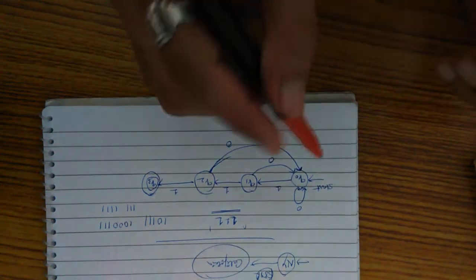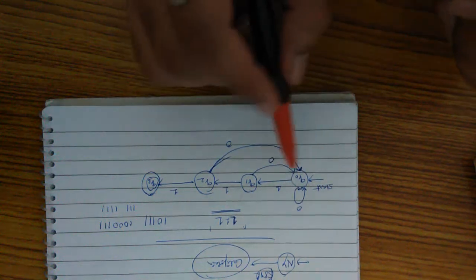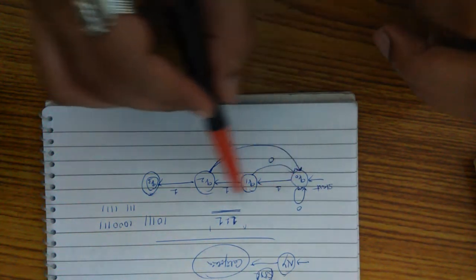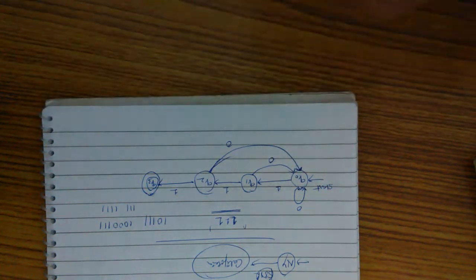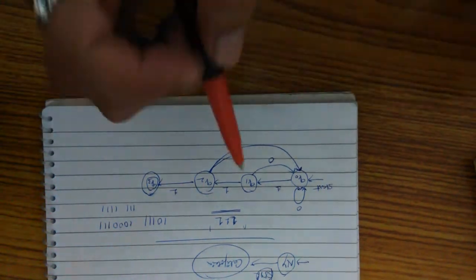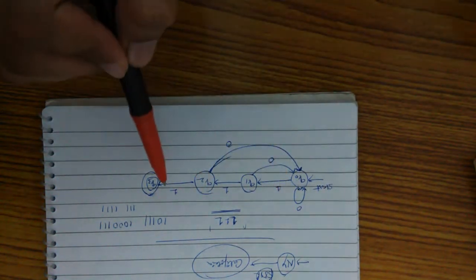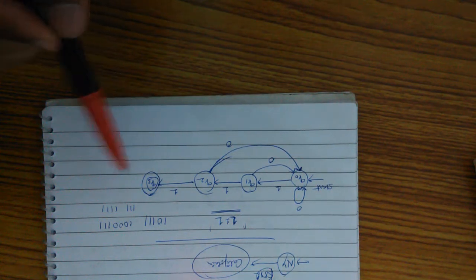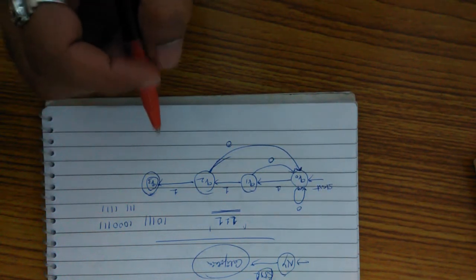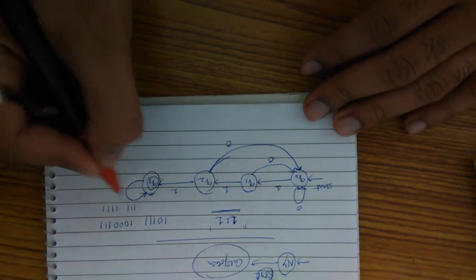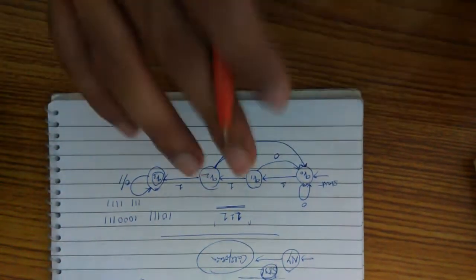So first time you got zero, stay there. Second time you got zero, get him back to the initial state. Third time you got zero, get him back to the initial state. So it's very simple. Now you got 111 and then you got zero or one, it doesn't matter.